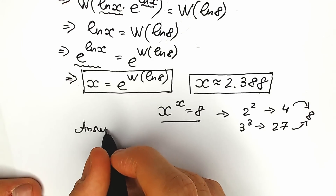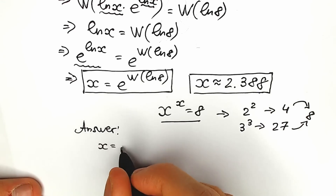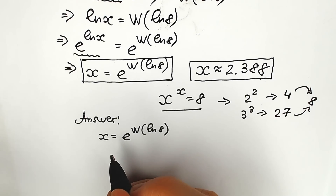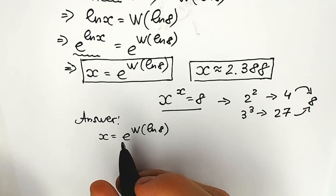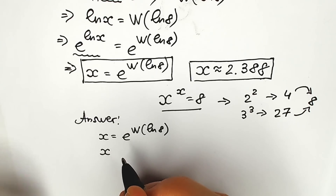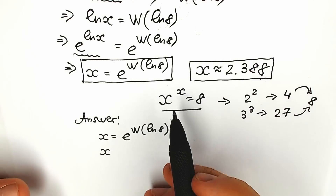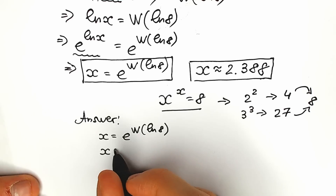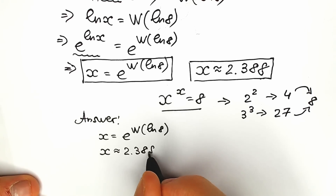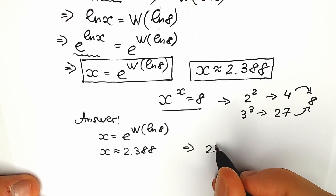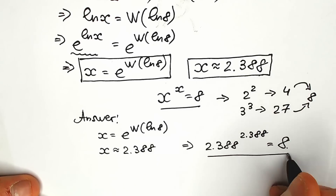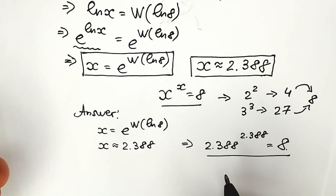So let's write our answer: x equals e to the power Lambert W of natural log 8. And approximately, x ≈ 2.388 — meaning 2.388 to the power 2.388 equals 8. You can check this on your calculator. I plugged it into a math library and got this answer, so everything looks great.